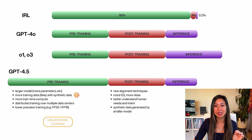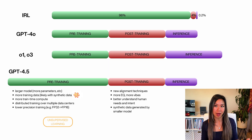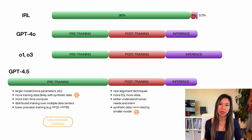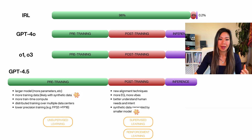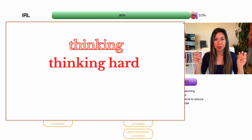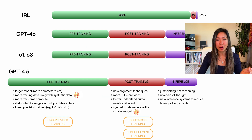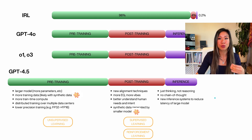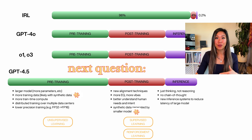Besides making unsupervised learning more scalable, no new unsupervised learning methods were developed — just brute-forcing more compute. What did have new methods is post-training, where new alignment techniques were developed to enable more EQ and better conversational vibes, with synthetic data generated by a smaller model. As usual, a mixture of supervised learning and reinforcement learning were used for post-training. For inference, GPT 4.5 is a general model — same as GPT 4.0 — so when you run it, the model is solely thinking, not reasoning, no chain of thought. The bigger model means longer inference time, so OpenAI incorporated new inference systems to reduce that latency.